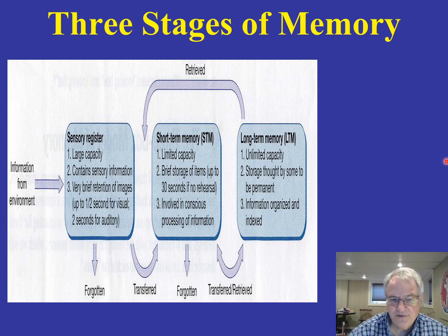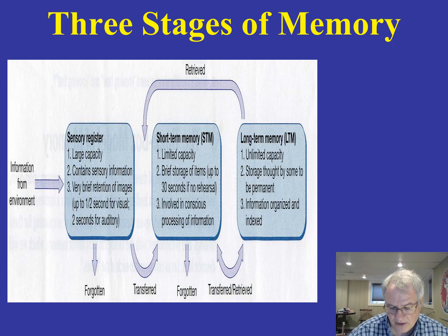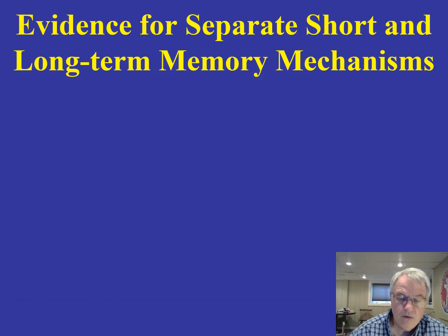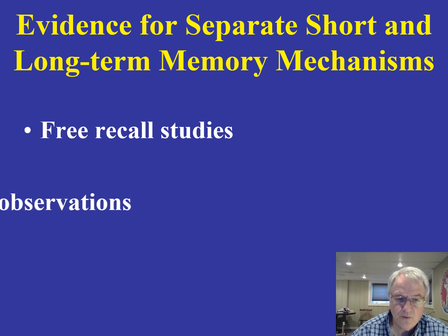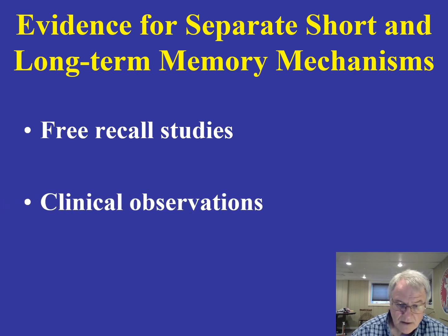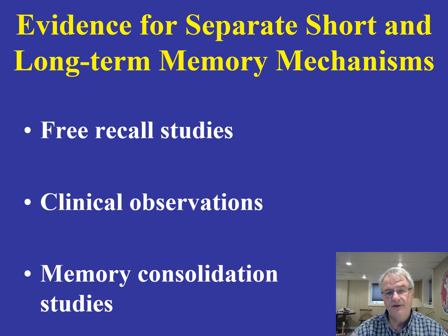One of the things psychologists have tried to do is separate these different stages. There's a lot of very interesting research which has shown quite definitively that our short-term system is very different from our long-term system. Evidence for short and long-term memory comes from three basic areas: free recall studies, clinical observations, and experimental work in the area of memory consolidation.